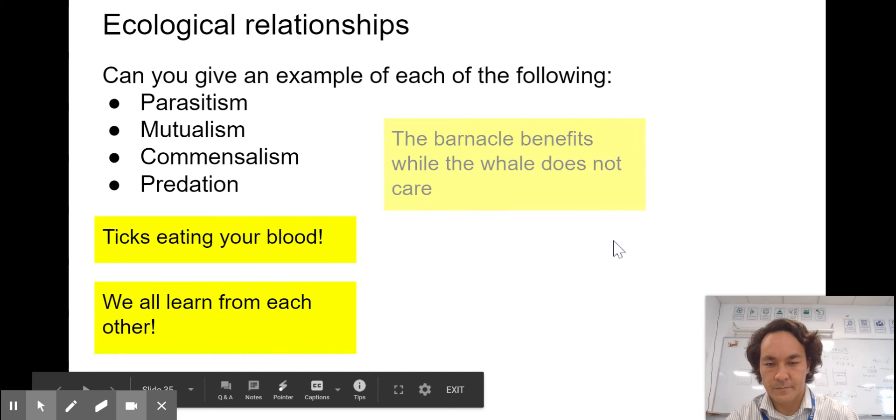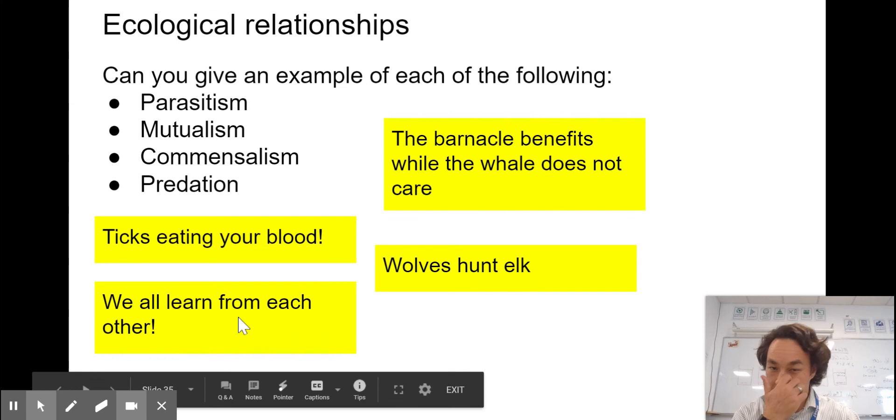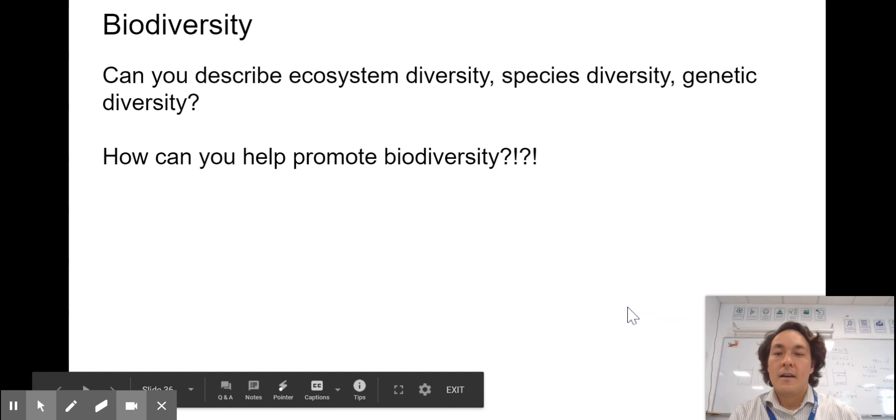Can you remember parasitism, mutualism, commensalism, and predation? Ticks eating your blood would be an example of a parasite. Mutualism, we all help each other, we all learn from each other, we're benefiting. Commensalism, one benefits while the other one doesn't. A barnacle benefits while the whale doesn't care. And predation is wolves are hunting elk. Predation and parasitism are often confused. I often think of a parasite as something living on something that hurts them.